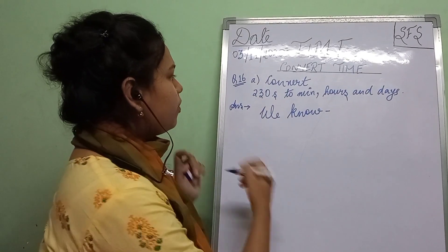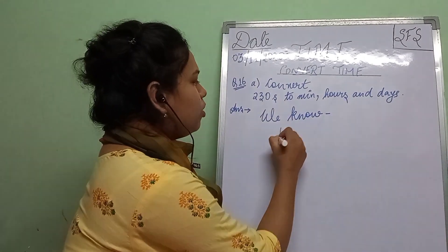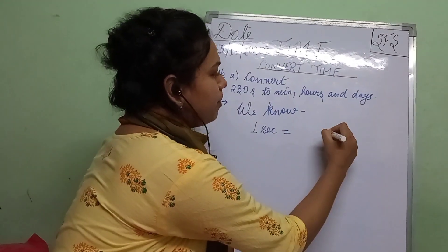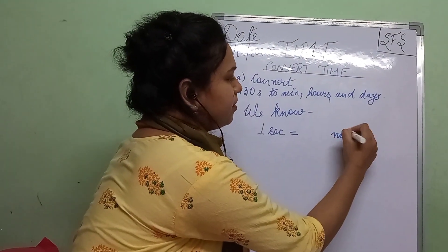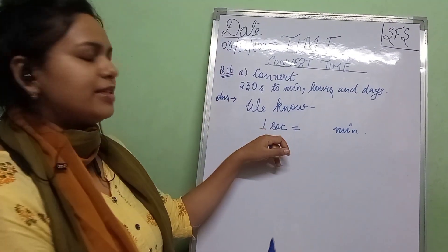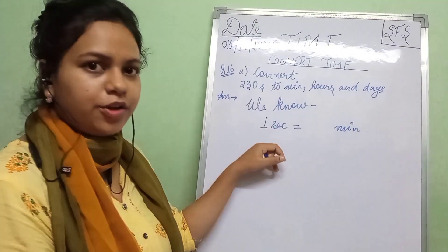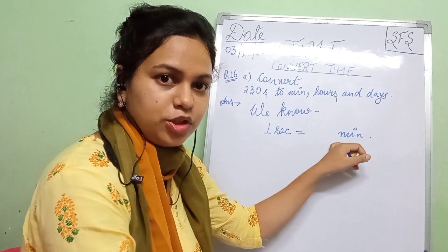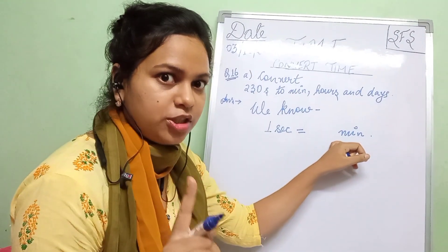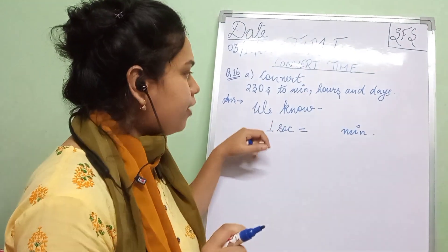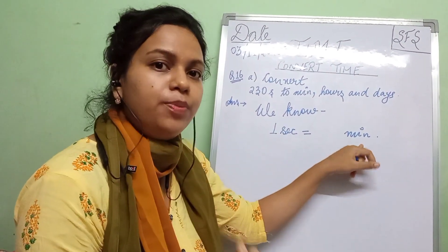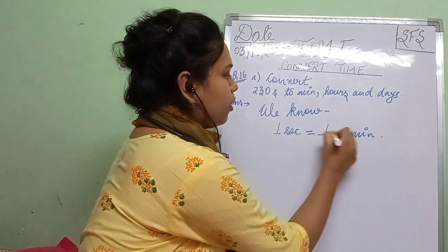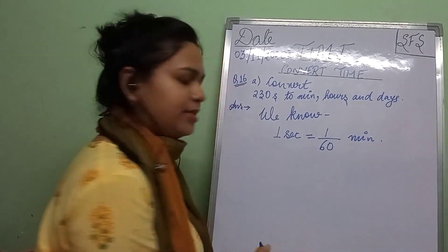Now, we know that 1 second is equal to how many minutes? Second is a smaller unit of time and minute is a larger unit of time. So from small to big, what do we do? We divide. 1 second equals 1 by 60 minutes.